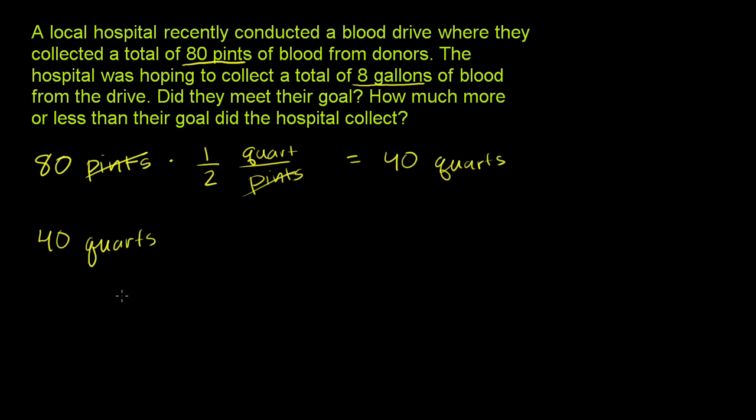Now we convert to gallons. There are 4 quarts per gallon, or 1 gallon has 4 quarts. Once again, we're going from a smaller unit to a larger unit—gallons. There's a factor of 4 difference, so since you're going to a larger unit, your brain should say you're going to divide by 4.